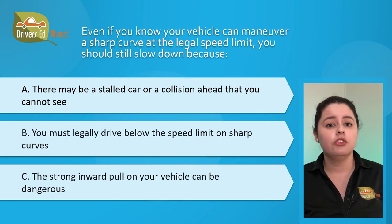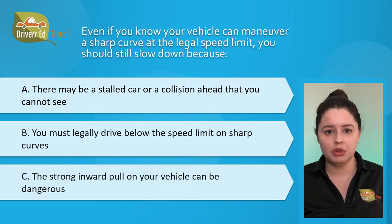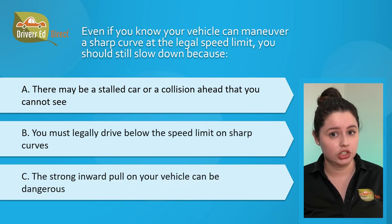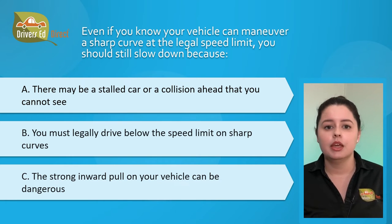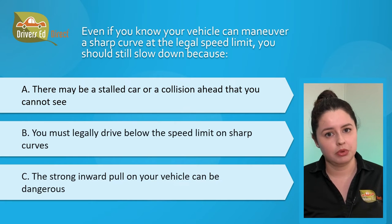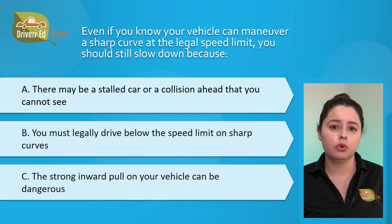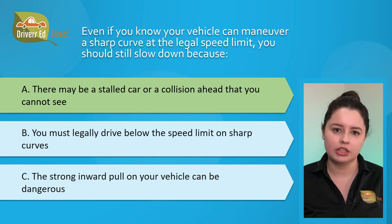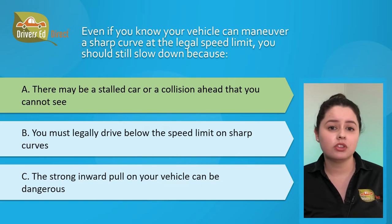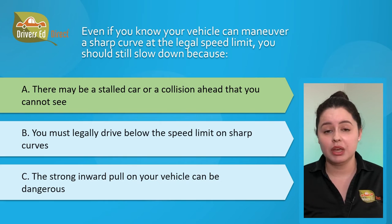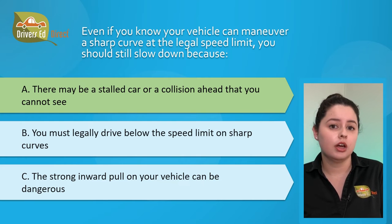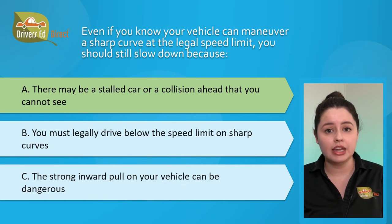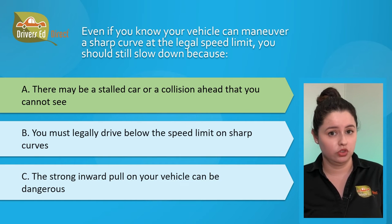Question number nine: even if you know your vehicle can maneuver a sharp curve at the legal speed limit, you should still slow down because: A) there may be a stalled car or collision ahead that you cannot see, B) you must legally drive below the speed limit on sharp curves, or C) the strong inward pull of your vehicle can be dangerous. The correct answer is A. You never know what's on the other side of a hill or curve, so assume there's another vehicle ahead. Slow down so you can stop smoothly for any hazard.